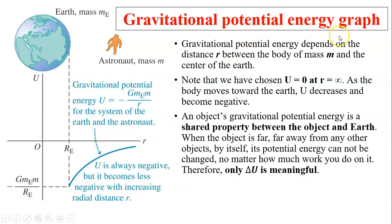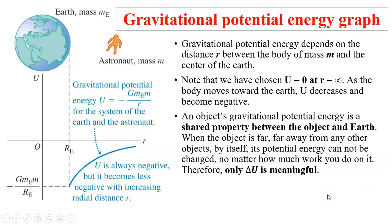Let's look at the gravitational potential energy graph. Gravitational potential energy equals negative GMe*m over r. This energy is for the system of the earth and astronaut — without Earth, the astronaut will not have potential energy. On Earth's surface, you have minimum energy. As you move away from Earth, U becomes less negative, so U increases. We have chosen U equals zero at r equals infinity. As the body moves toward Earth, U decreases and becomes more negative. Gravitational potential energy is a shared property between the object and Earth. Only the change of U is meaningful.